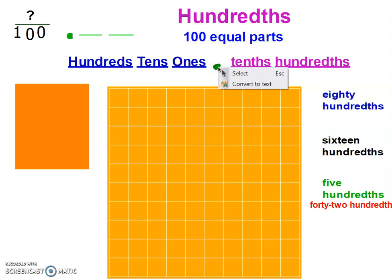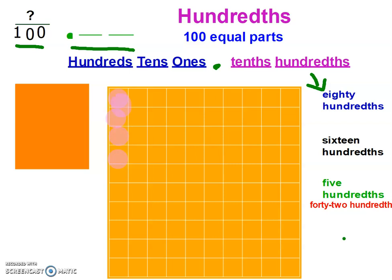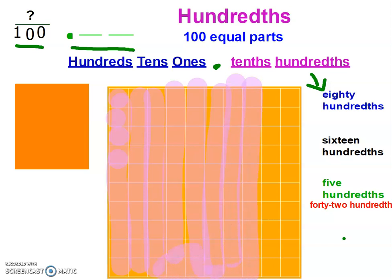Using our place value chart — hundreds, tens, ones, tenths, hundredths — you can practice making each of these, drawing them, and also writing them as a fraction and a decimal. For eighty hundredths, I would have eighty little squares — that would be how many columns? Eight columns, so I should have only two columns left that aren't shaded. I need to be able to represent it, read it, write it as a fraction, and write it as a decimal.